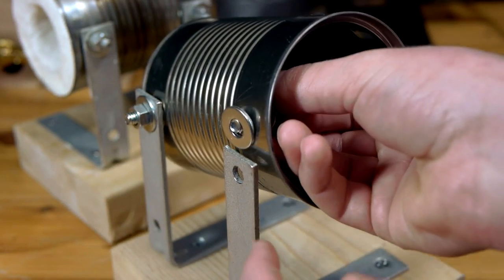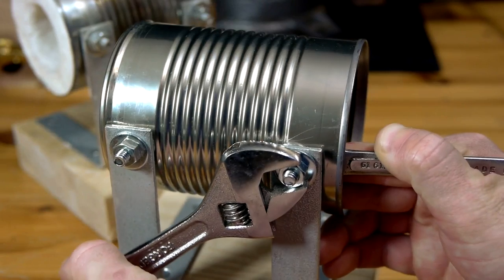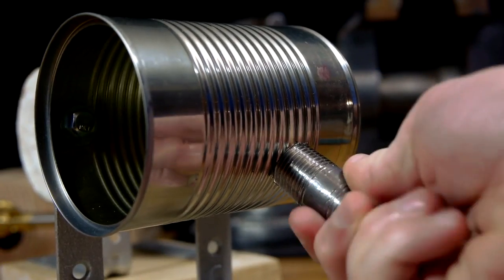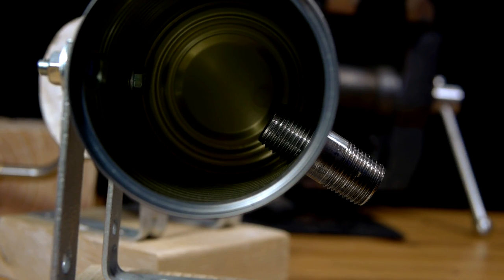The soup can can now be attached to the L-straps with bolts and washers. It's important that these are tightened securely. The iron pipe nipple is threaded into the hole that was made for it, opposite the straps, and the forge is ready to receive a fireproof lining.